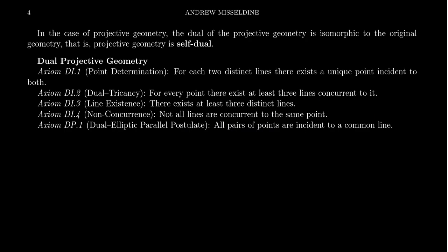The reason I mention this is that a projective geometry is actually an example of a self-dual geometry — meaning that if you take the dual of the geometry, you get something isomorphic to the original. If you interchange the roles of points and lines, it makes no difference to the geometry whatsoever.